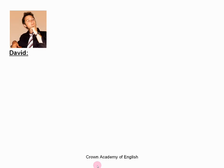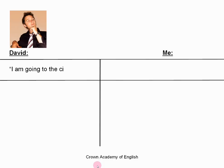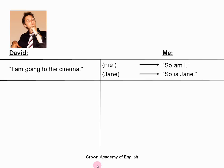Here is a friend of mine called David, and David and I are having a conversation. David says, 'I am going to the cinema.' And I say, 'So am I.' This means that I am saying to David that I am going to the cinema too. I am also going to the cinema. I can also say, 'So is Jane,' and that means Jane is also going to the cinema. I am agreeing with him.